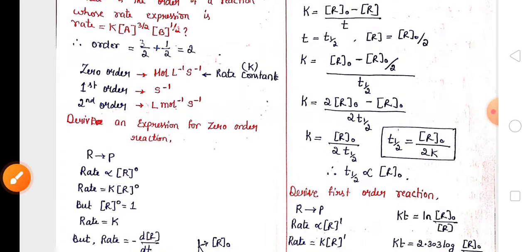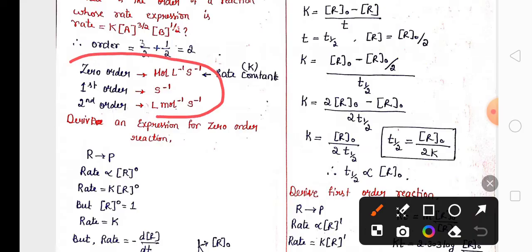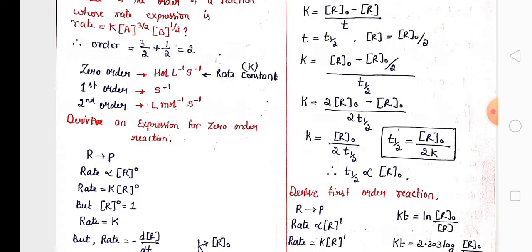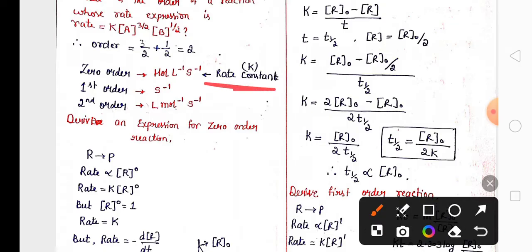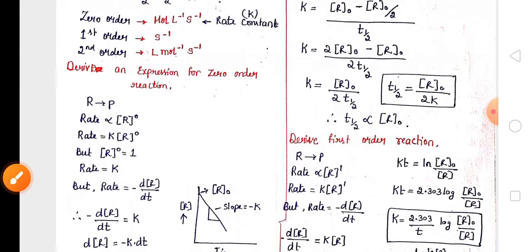You need to remember the units of zero order, first order, and second order reactions. Remember that the rate constant unit for zero order reaction is moles per liter per second — the rate constant k and zero order reaction unit are the same.